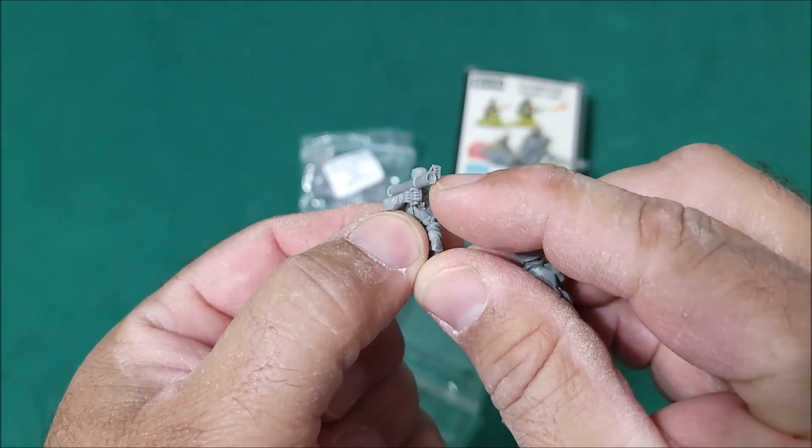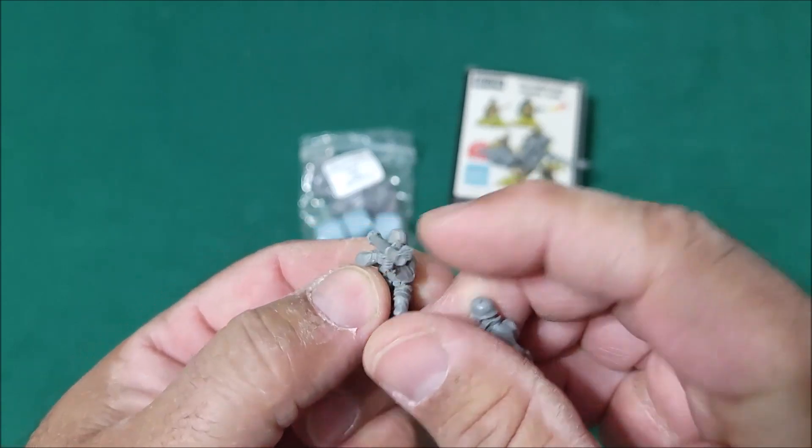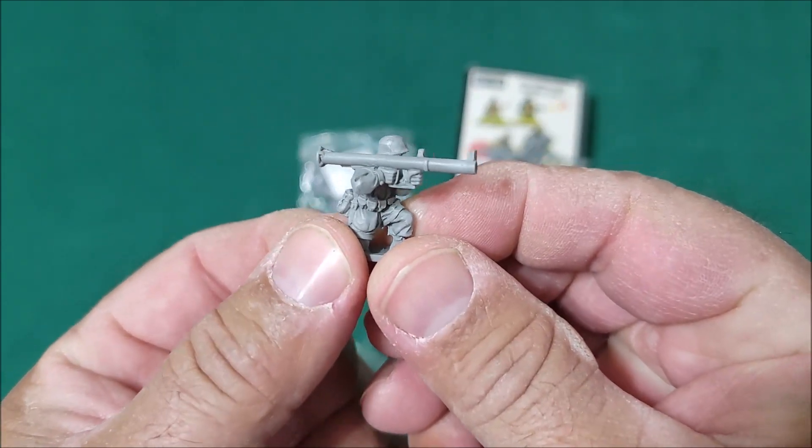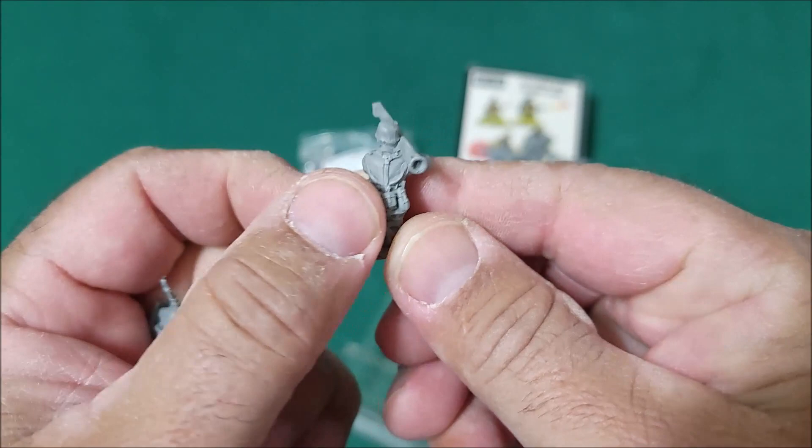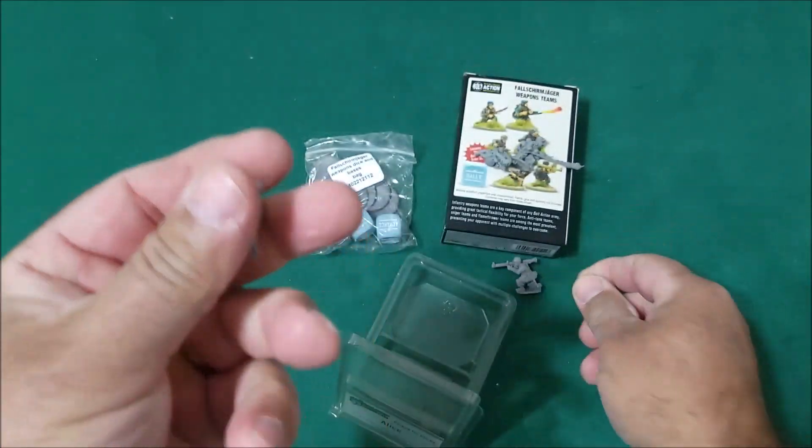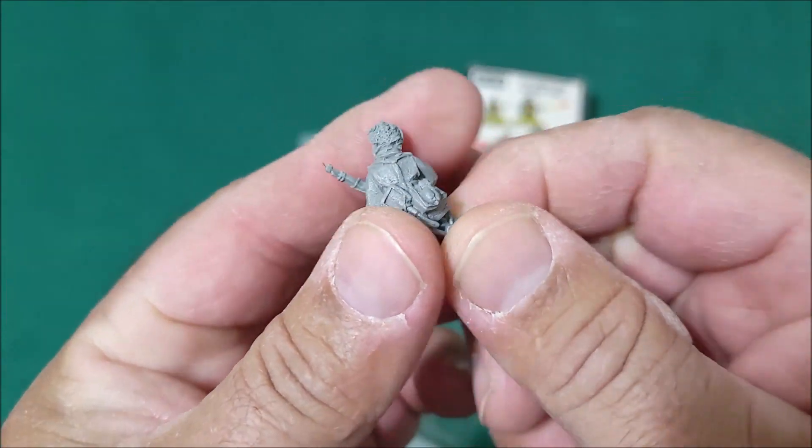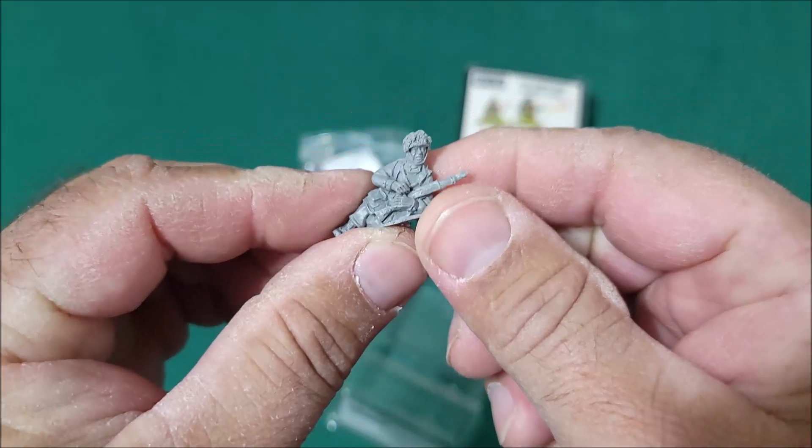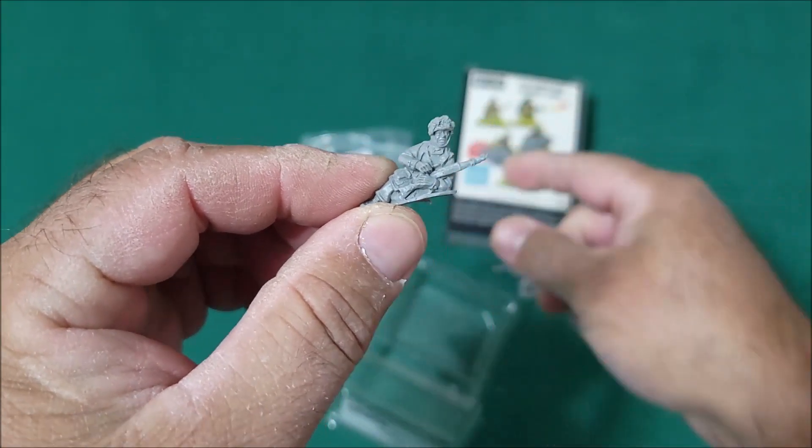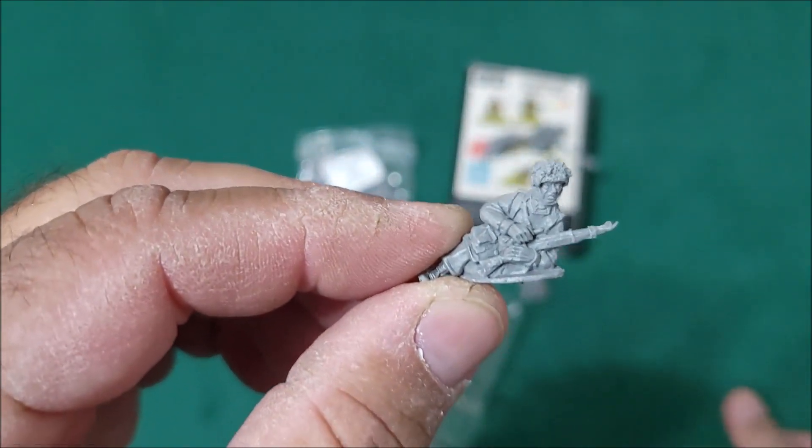Oh look, they kind of hollowed it out a little bit. Might take a drill and hollow it more, or just leave it alone knowing me I'll mess it up. It's a little bit more flashy on there but that's typical for this kind of resin stuff. The spotter for the bazooka.